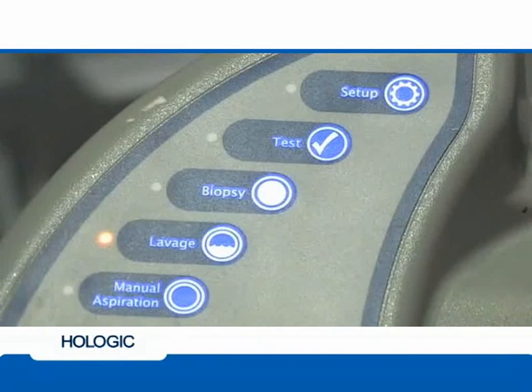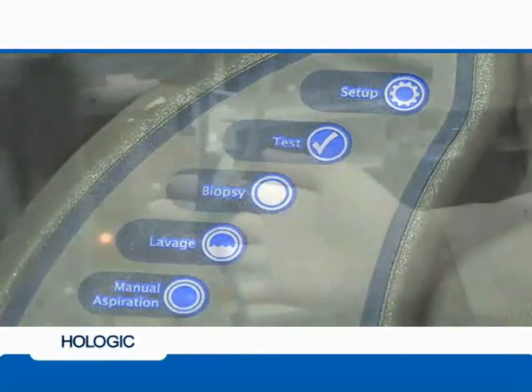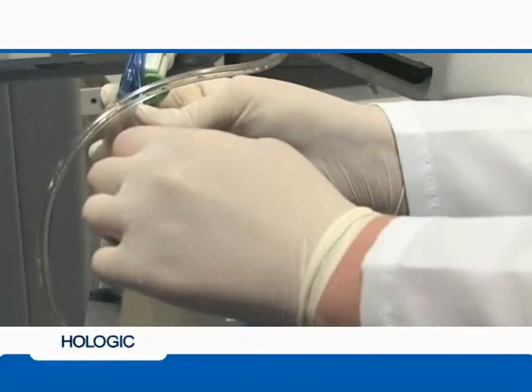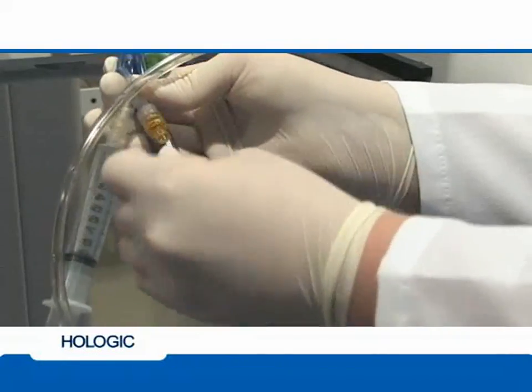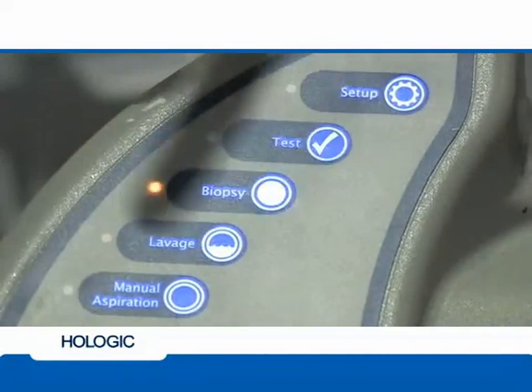To begin core retrieval, leave the console in lavage mode and disconnect the saline line at the proximal end of the Y-valve by removing it from the yellow connector. Return the console to biopsy mode.